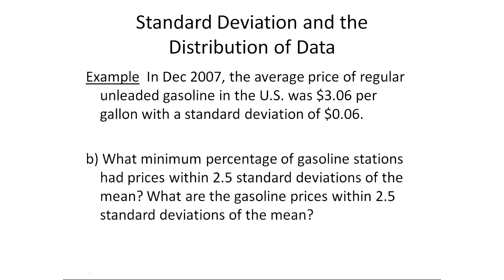Notice that this is the same style question in part B as what we just did a second ago. The only change here is that now k is 2.5. So this would be 1 minus 1 over 2.5 squared. In other words, 1 minus 1 over 6.25, which ends up being about 84%. So if you count out by 2.5 standard deviations, it has to be at least 84%.